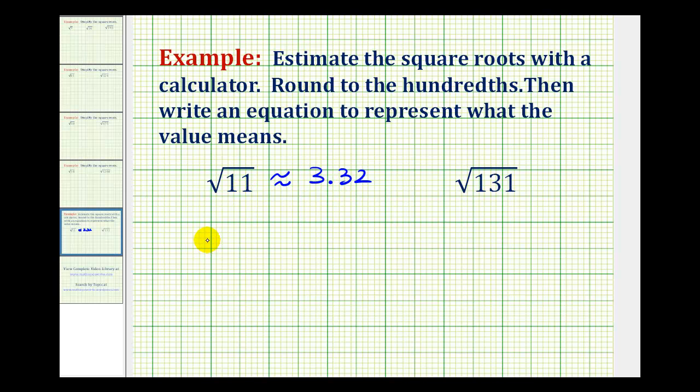So the meaning of this is that if we square 3.32, and this is rounded, so it's going to be approximately equal to 11.